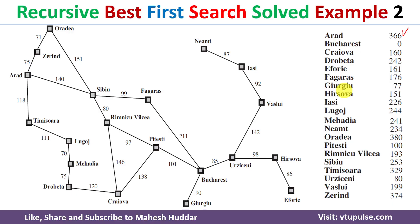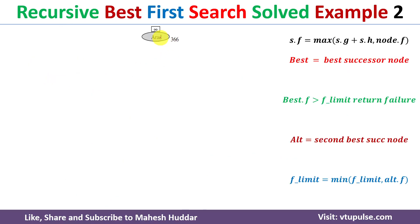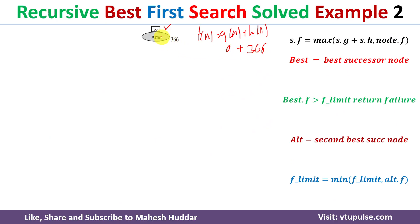Similarly, heuristic values are given for all other cities. Now we apply the RBFS algorithm to find an optimal path from Arad to Bucharest. We start with the initial node, Arad, and set the f_limit equal to infinity. We calculate f(Arad) using the equation f(n) = g(n) + h(n). Since Arad is the initial node, g(Arad) = 0, and h(Arad) = 366, so f(Arad) = 366.